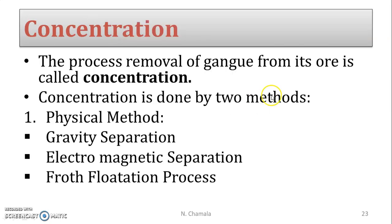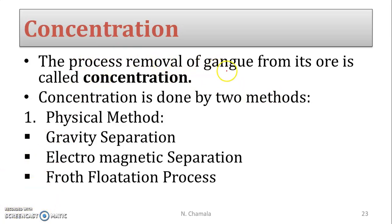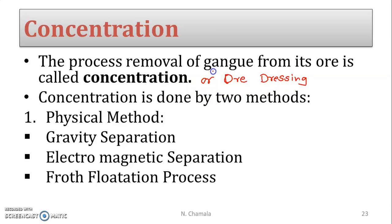After crushing, the next step is concentration. Concentration is defined as the process of removal of gangue or matrix from the ore. It is also called ore dressing. In this step, the unwanted gangue is removed, which increases the percentage of the ore.